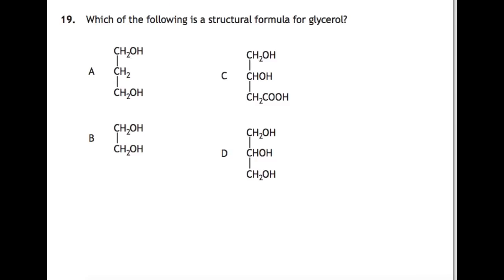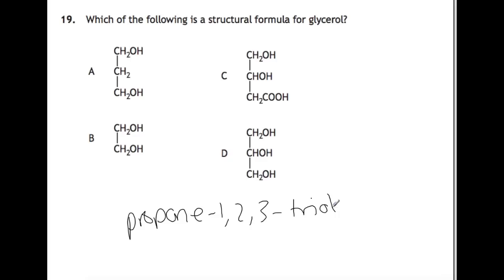Which of the following is the structural formula for glycerol? It helps to know the systematic name for glycerol: propane-1,2,3-triol. So we need 3 carbons, so we cannot have B. One option only has 2 hydroxyl groups, another has a carboxyl group, and the correct answer has 3 hydroxyl groups.